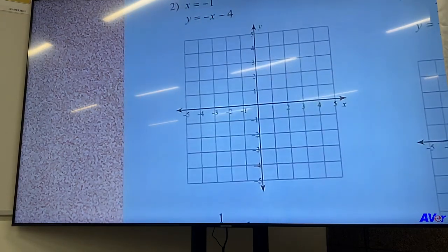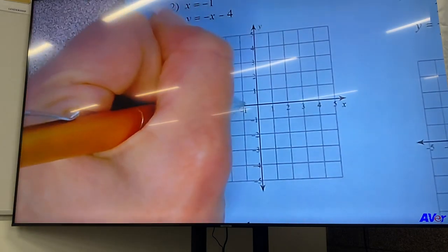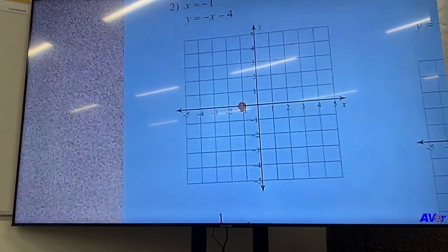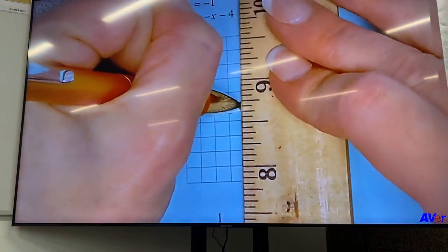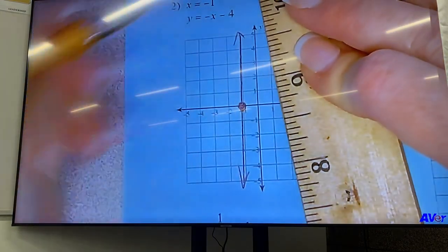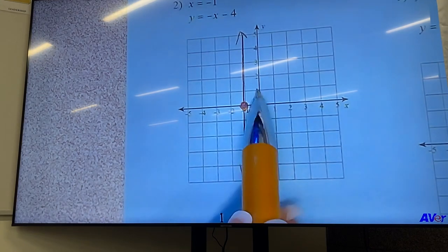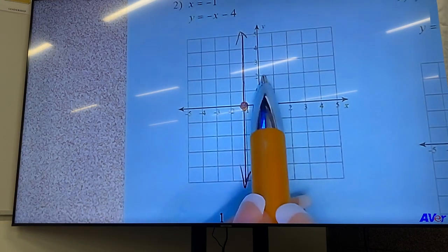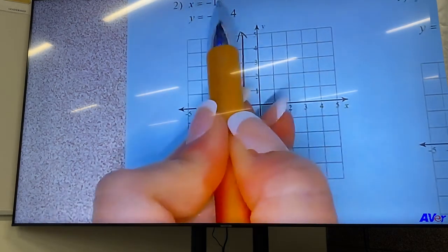So problem two, we have x equals negative one. So that means this is a little different. This means that x is always negative one. So it's just a line that goes straight through that number. So if y is one, x is still negative one. If y is two, x is still negative one. X is always negative one. So that's that first line.